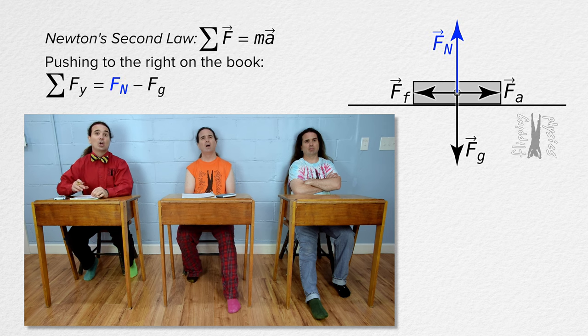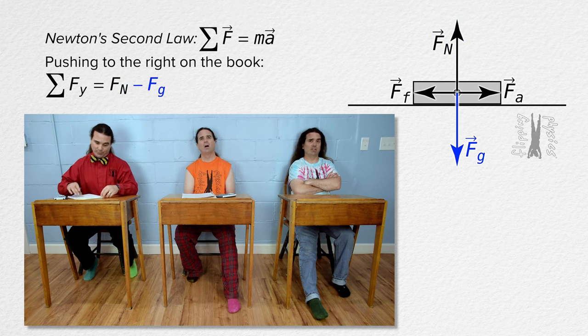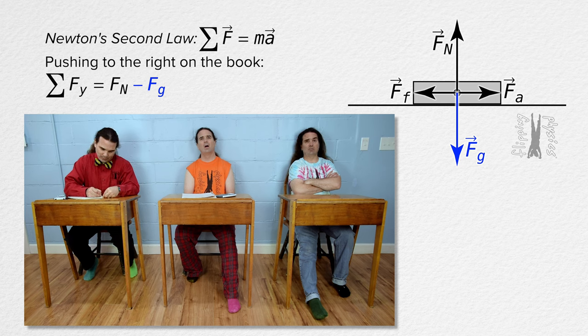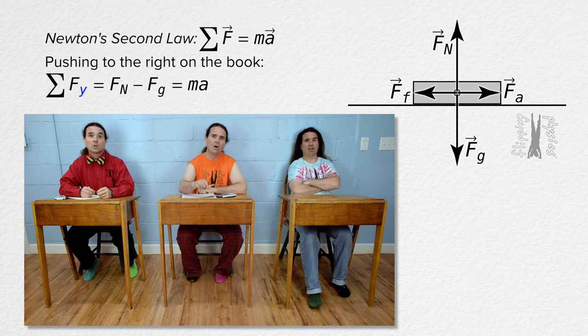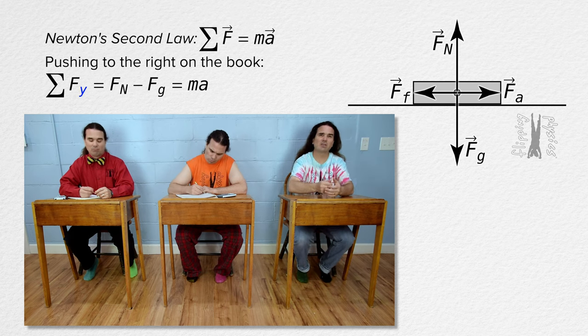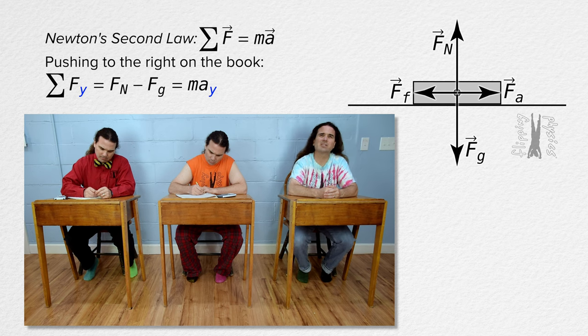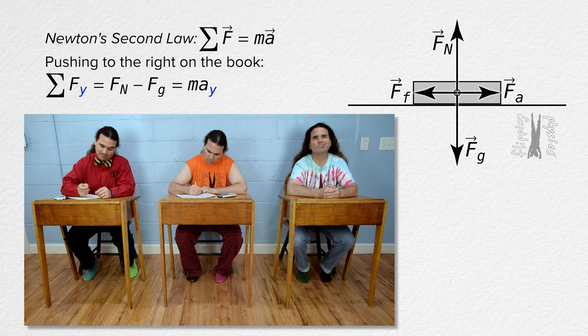When we sum the forces in the y direction, the force normal is up so it is positive. And the force of gravity is down so it is negative. As you said, net force always equals mass times acceleration. In this case, because it is the net force in the y direction, the acceleration is also in the y direction. The book is at rest.